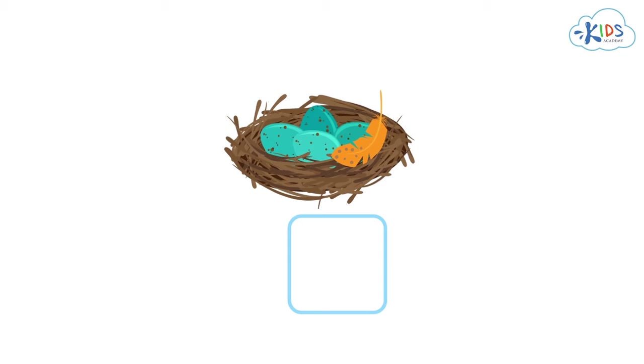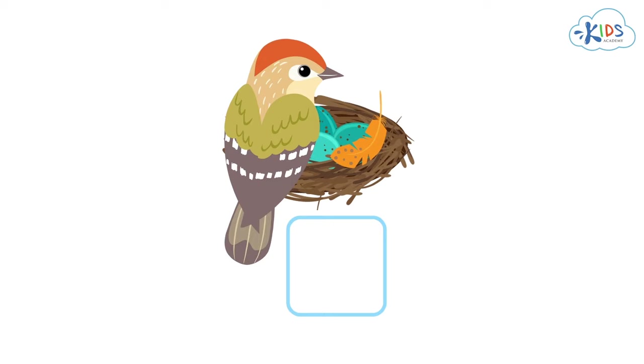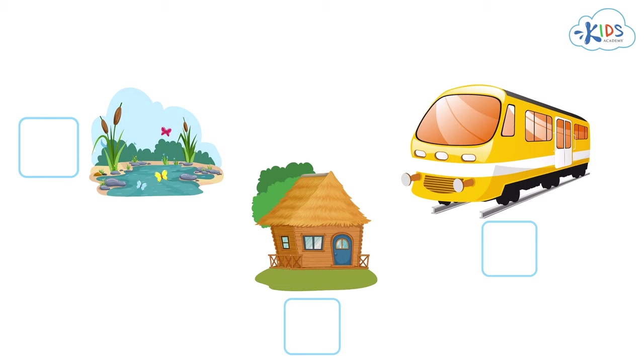What about this nest? Can someone live here? Look at the eggs and feathers. This might be a good home for a bird, but not a person. Next, we have a pond, a hut, and a train.